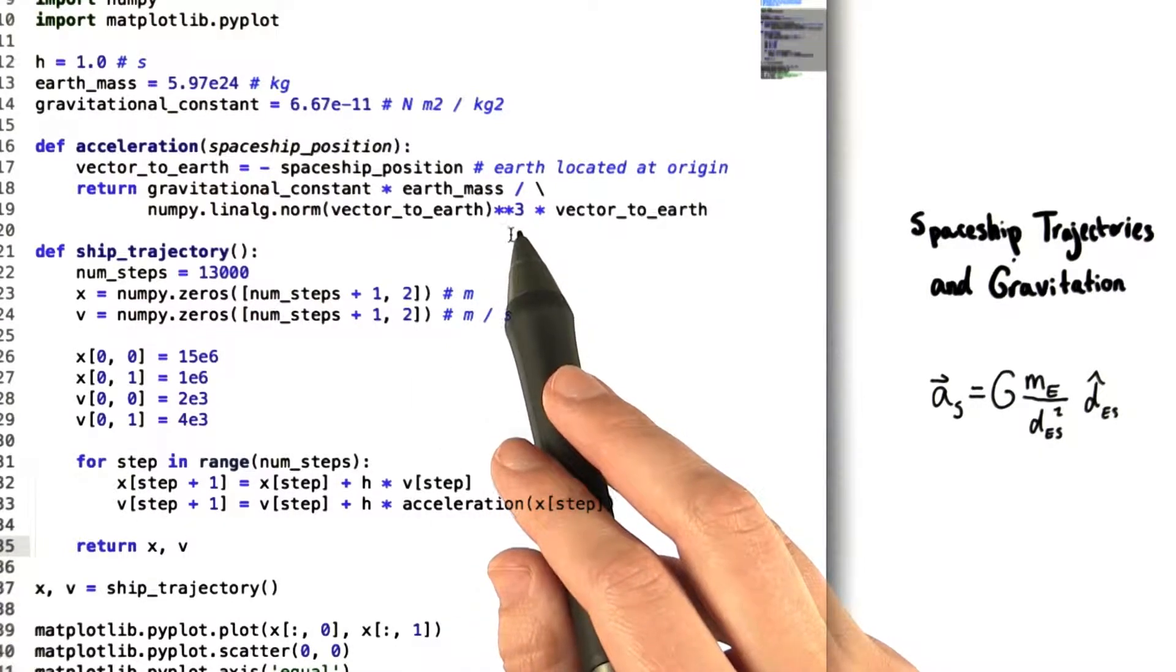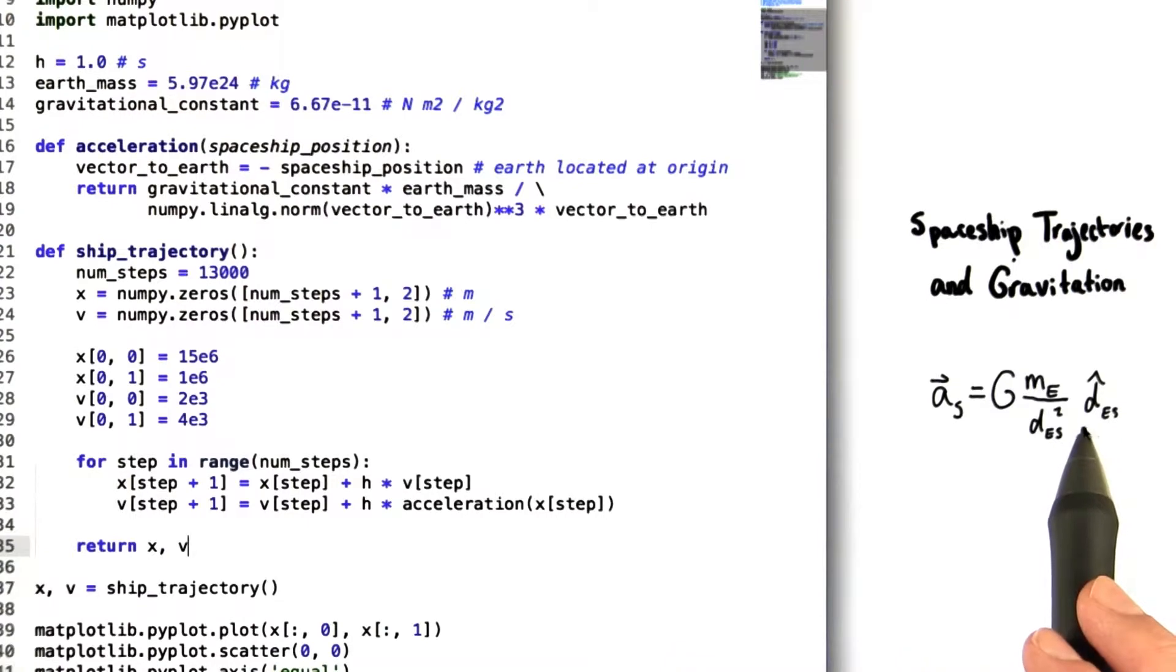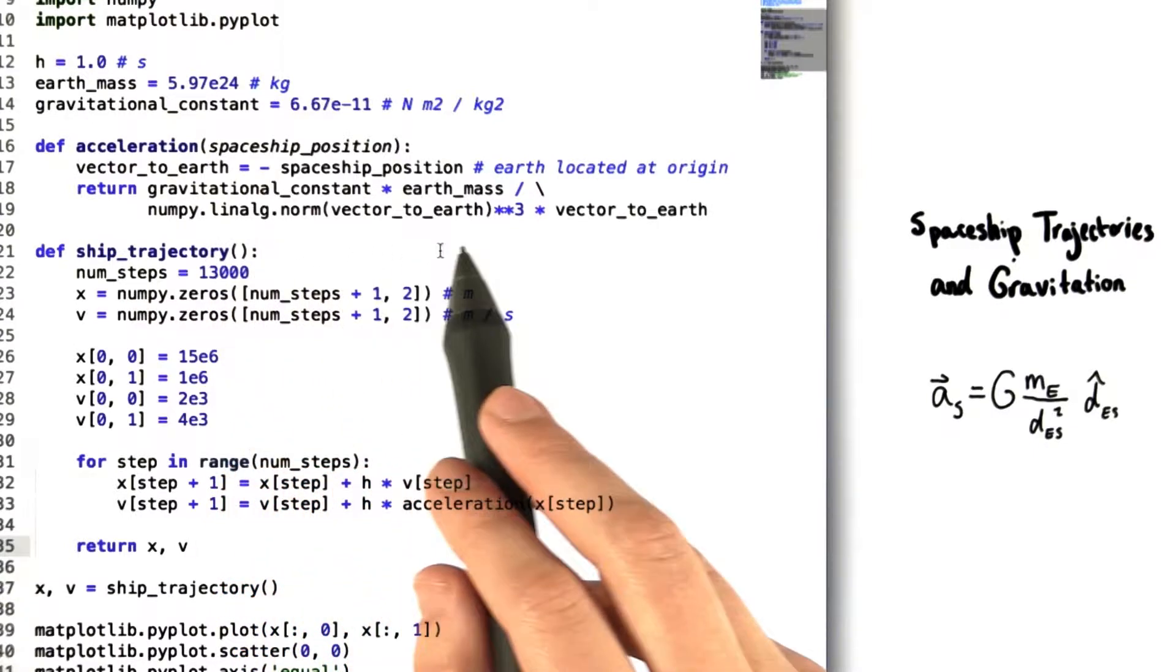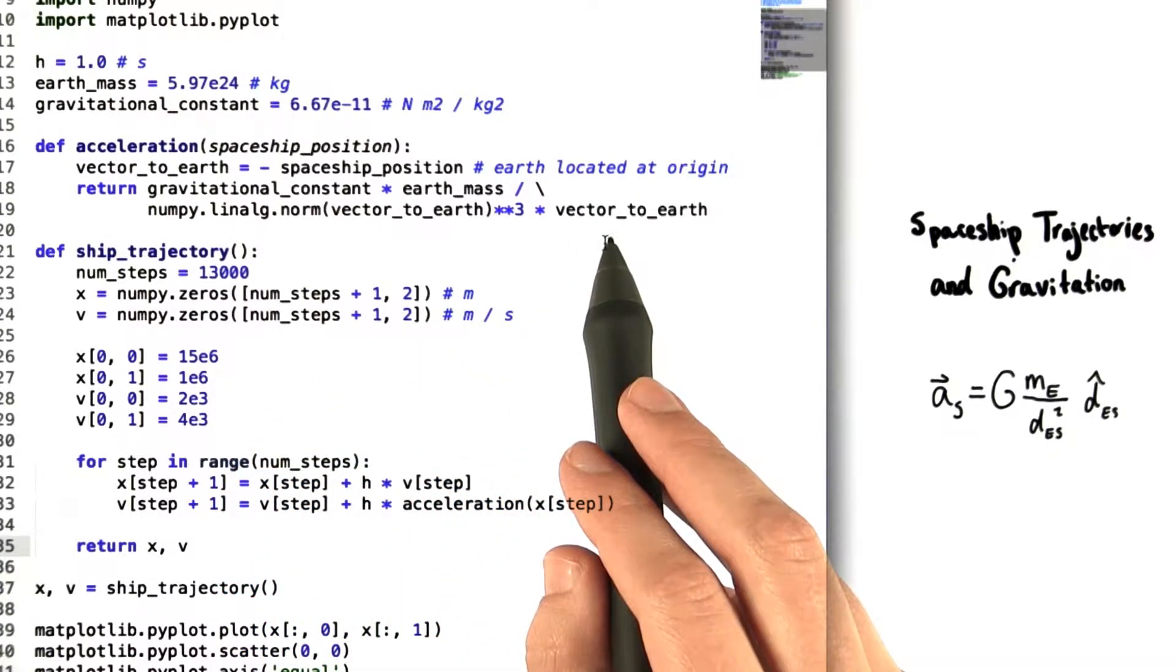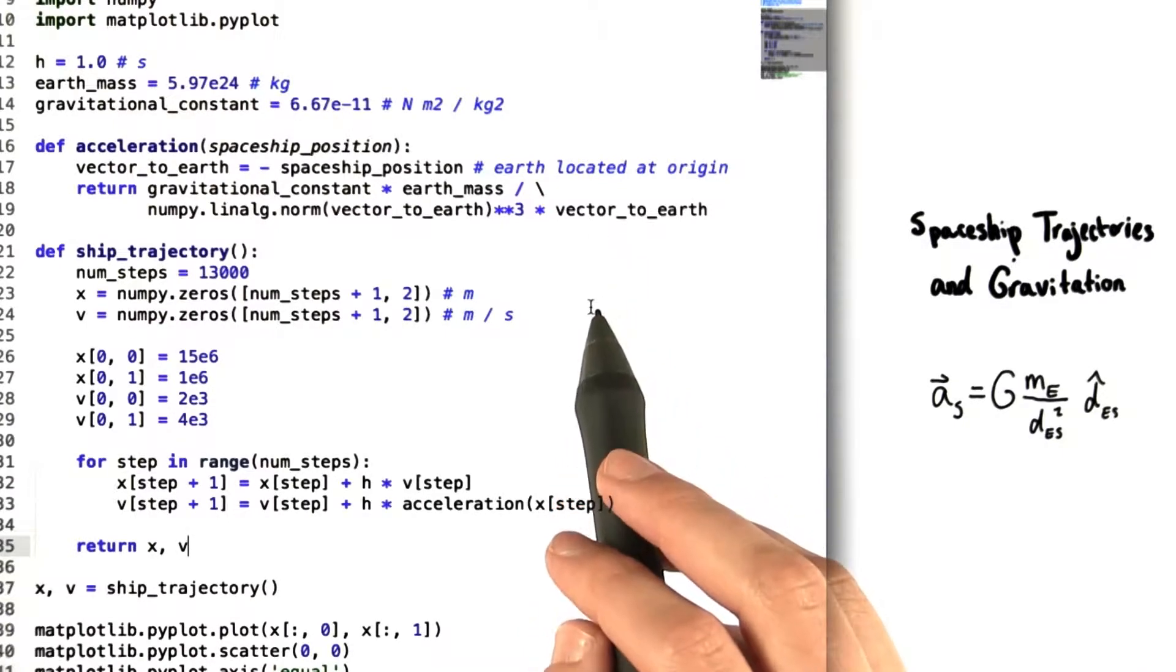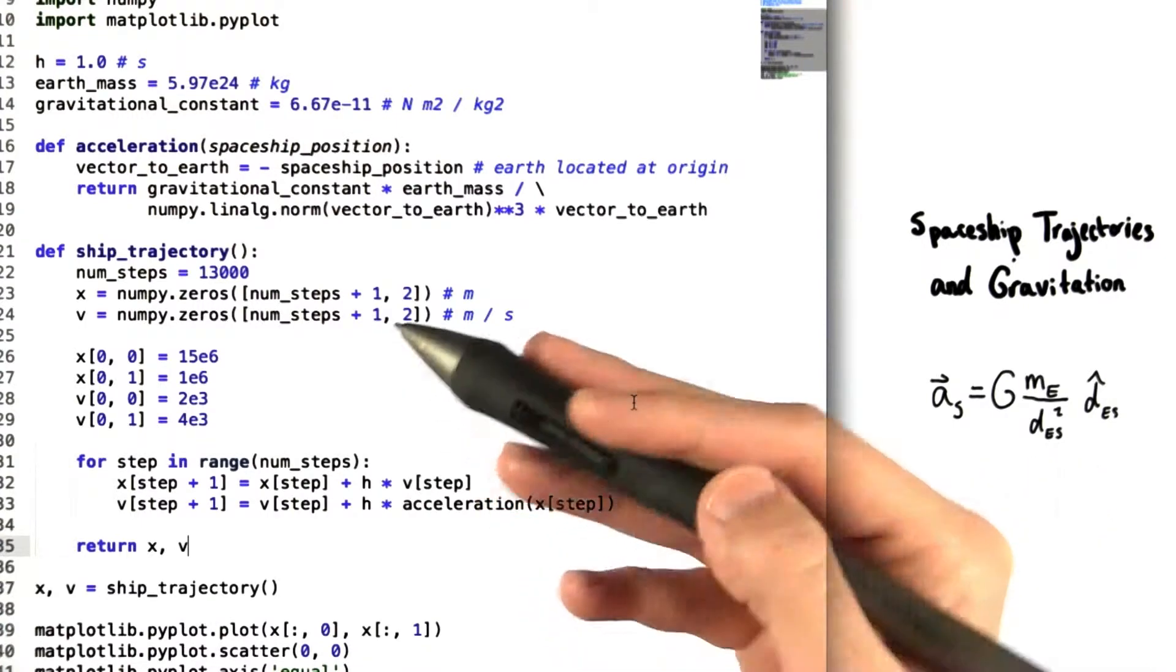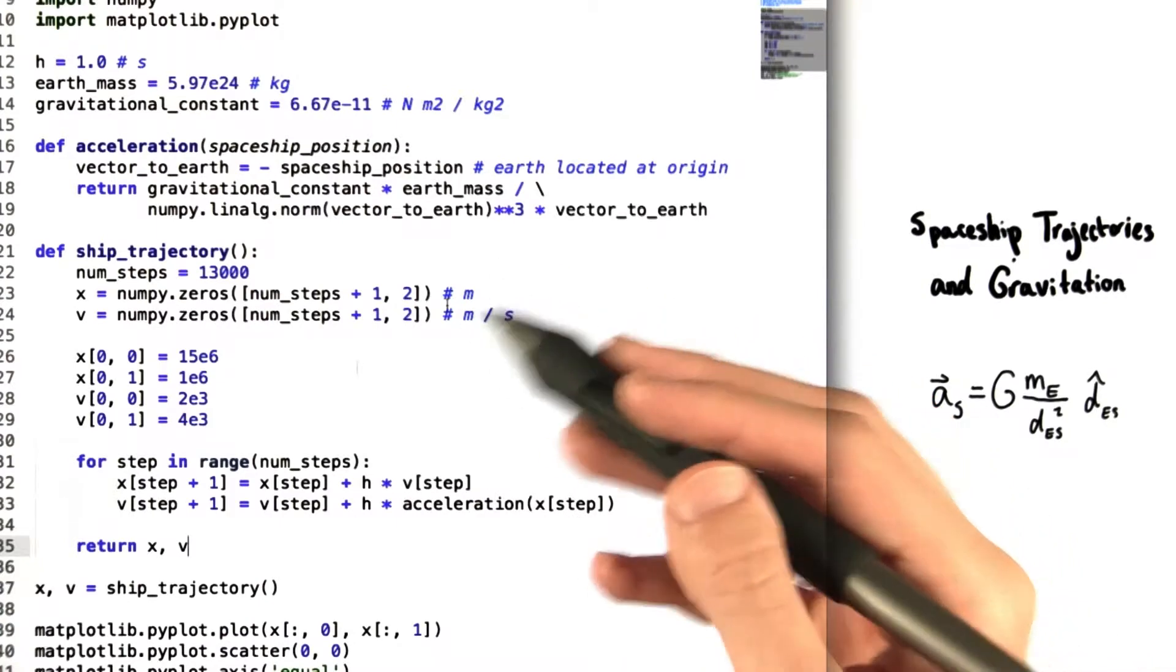The reason for this is that we're also multiplying by that same vector again. Whereas in the equation, we're multiplying by the unit vector. This means that in the Python version of the equation, we effectively have the magnitude cubed in the denominator and the magnitude to the first power in the numerator, which gives overall a factor of 1 over the magnitude squared, which is exactly what we see in the original equation. This makes our job a little bit easier because we don't have to define a unit vector for the vector to Earth.